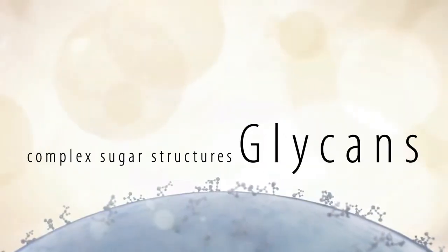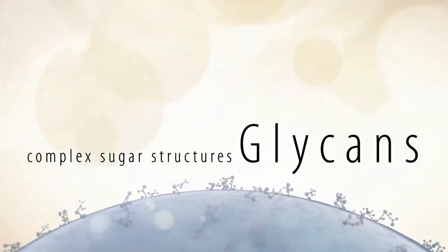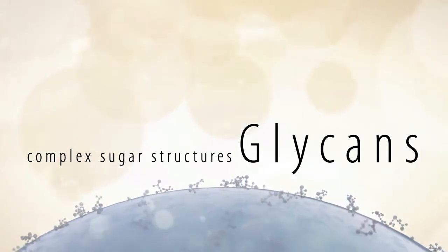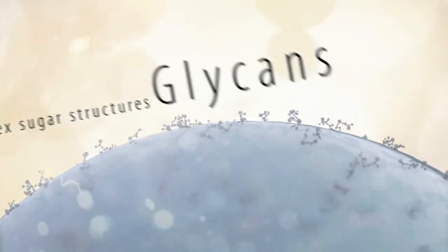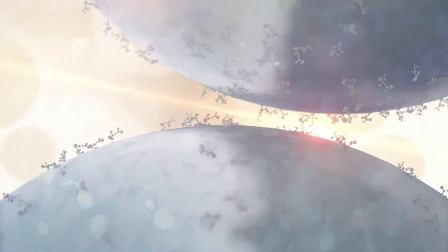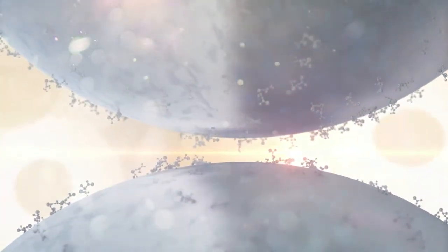Complex sugar structures called glycans cover almost every cell in our body and provide the network that allows cells to communicate their every need.